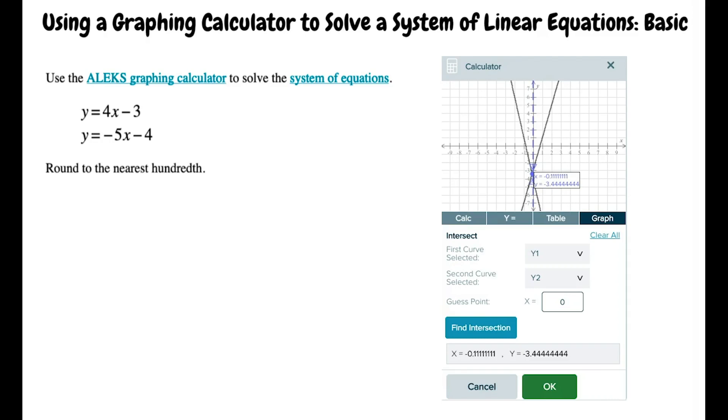So given this intersection point, what is the last step? Well, looking at the instructions, it says we need to round our results to the nearest hundredth, so would our final answer be negative 0.11, negative 3.44? You're exactly right. It seems like you are now ready to use the ALEKS graphing calculator to solve the system of linear equations.